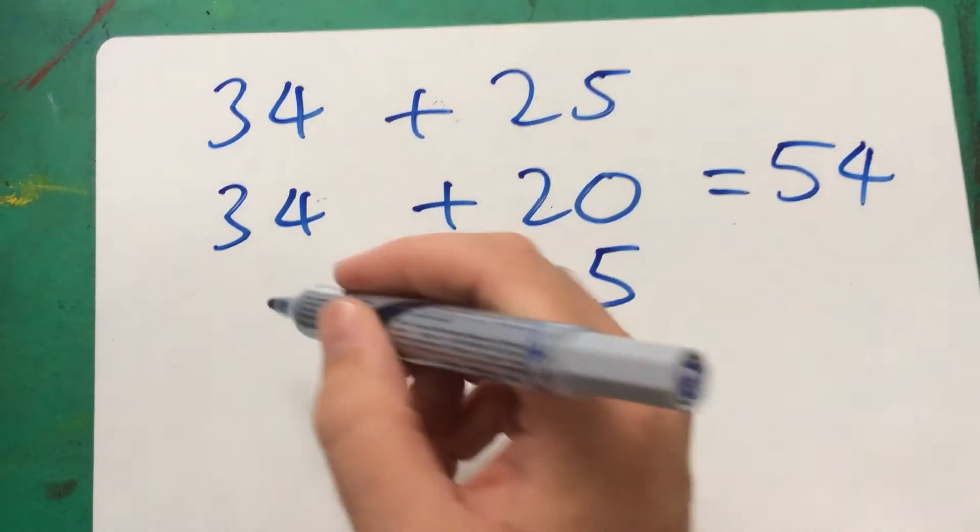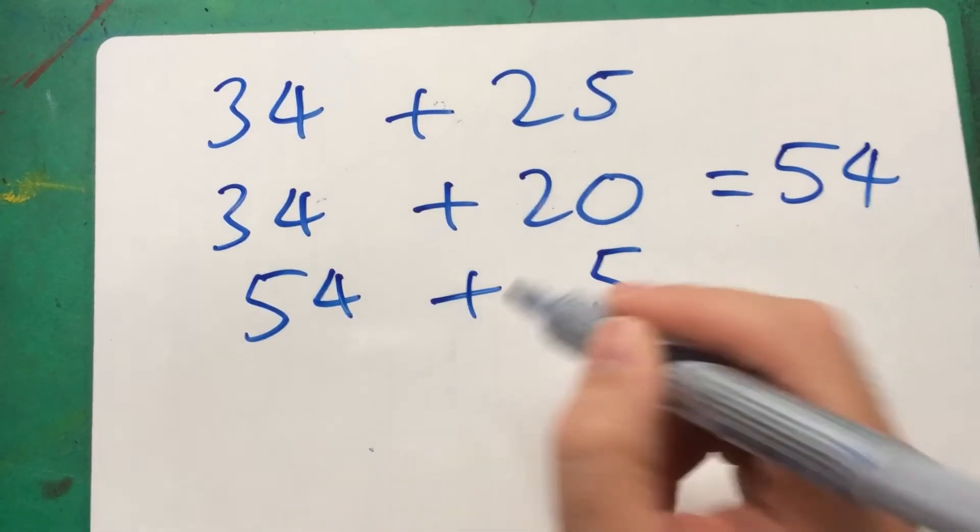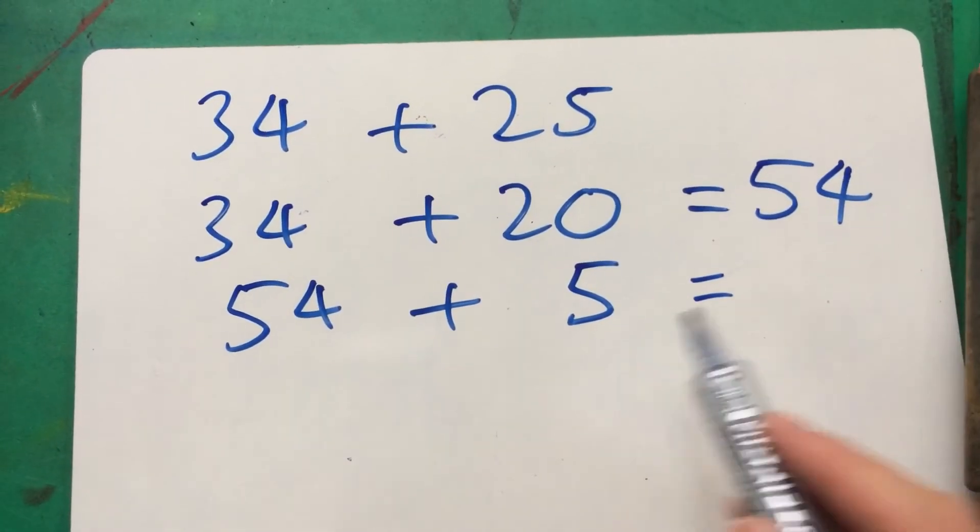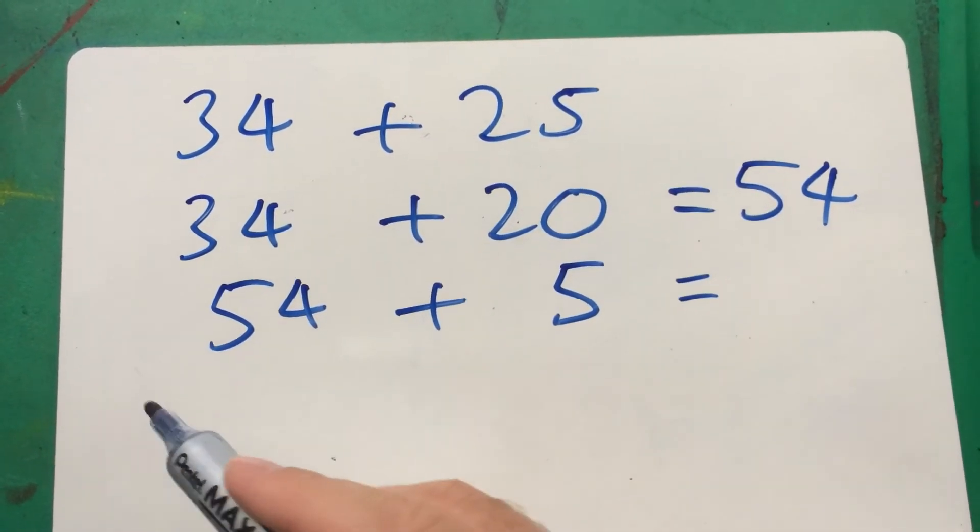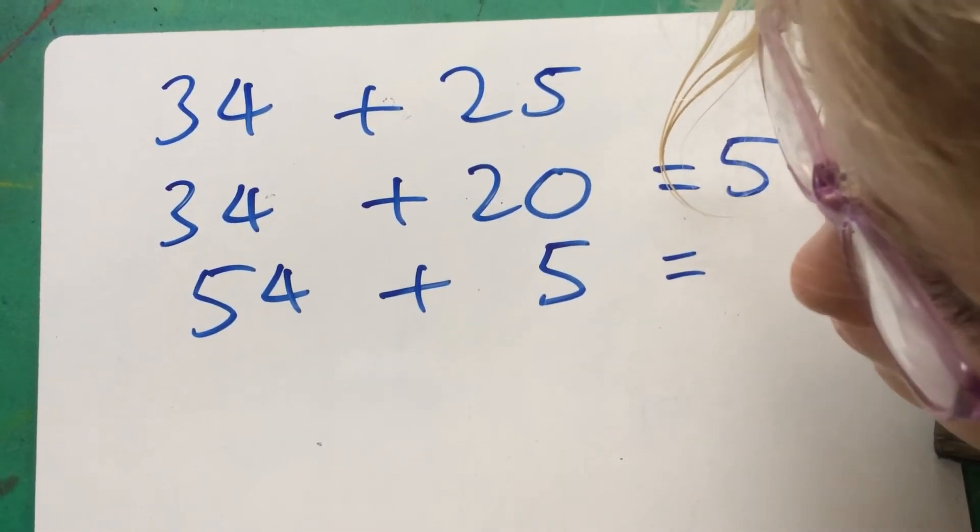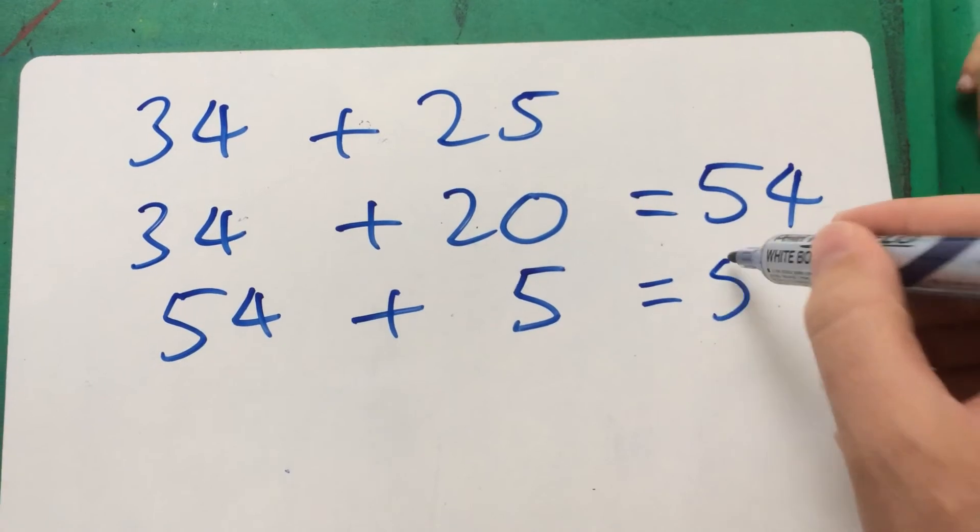Now we're going to take that 54 and we're going to add the leftover units of 5. What's 54 plus 5? Seven. What's 54 plus 5? 59.